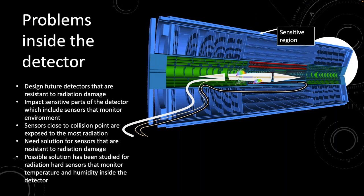The inner detector, which will be part of the focus of this talk, is used to detect the direction, momentum, and charge of electrically charged particles. The electromagnetic and hadronic calorimeters are used to measure energy deposits of these particles, and the muon spectrometer measures the momentum of muons. When considering the design for future detectors, we need to be cognizant of the fact that the components of the detector need to be resistant to radiation damage. We need to assess the impact of radiation damage on the sensitive parts of the detector, including sensors that monitor the environment.